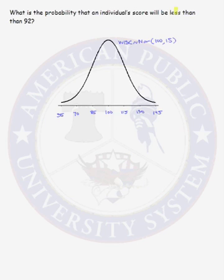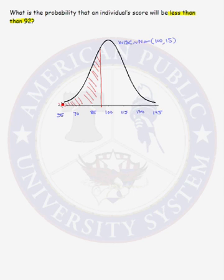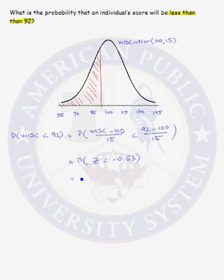Now let's find the probability that an individual's score will be less than 92. Let's shade the region on our normal curve represented by our probability. The area to the left of 92 under our normal curve represents the probability that we are trying to calculate. The probability statement is: the probability that our WISC score will be less than 92. We need to standardize this random variable in order to use the standard normal table. Standardizing by subtracting its mean and dividing by its standard deviation, the probability of a WISC score being less than 92 is the same as the probability that a standard normal random variable is less than negative 0.53.